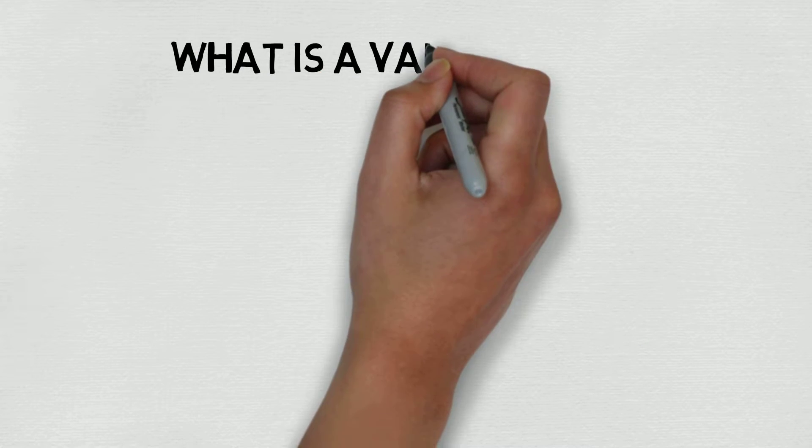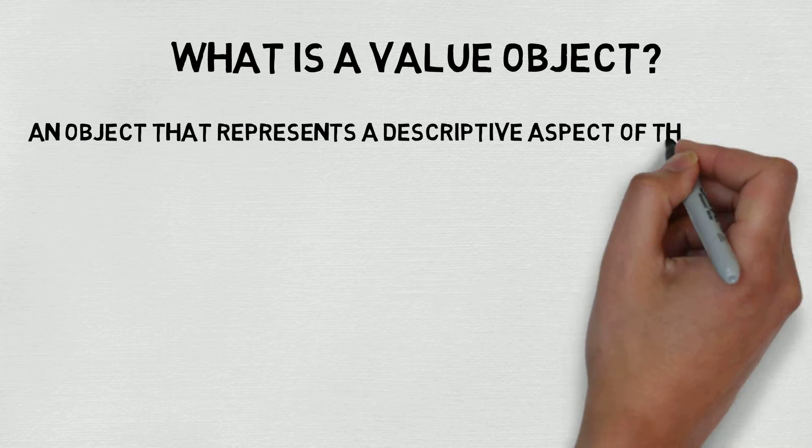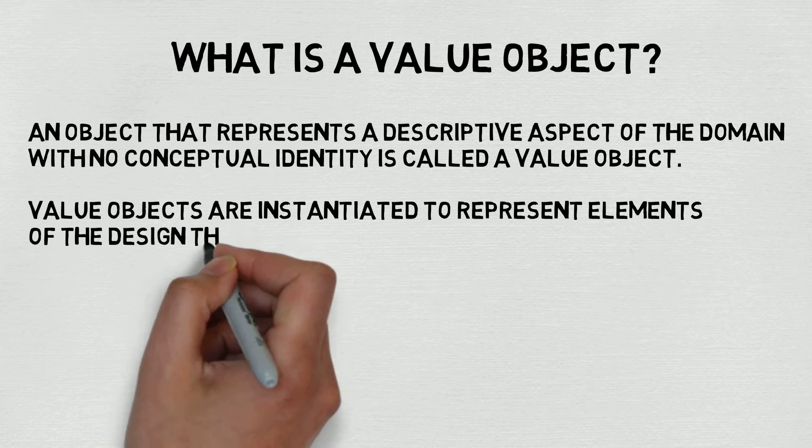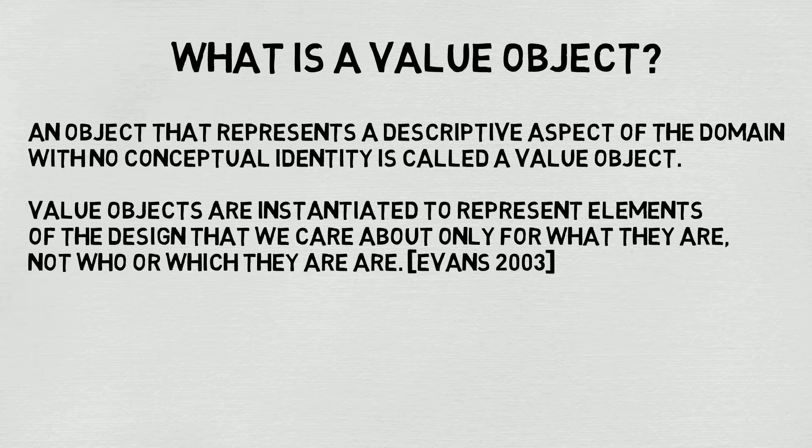A value object, as defined by Eric Evans in his book Domain-Driven Design: Tackling Complexity in Software, is an object that represents a descriptive aspect of the domain with no conceptual identity. Value objects are instantiated to represent elements of the design that we care about only for what they are, not who or which they are.